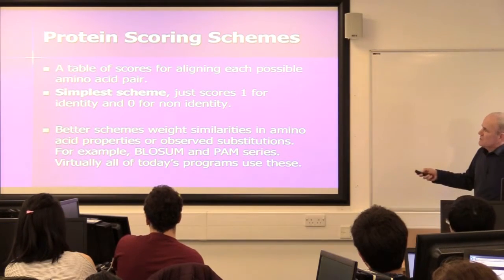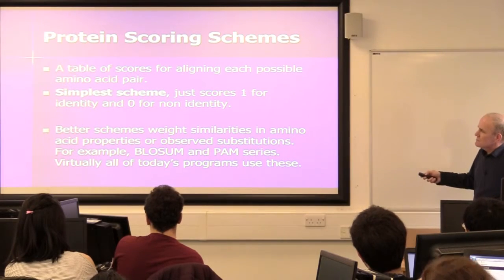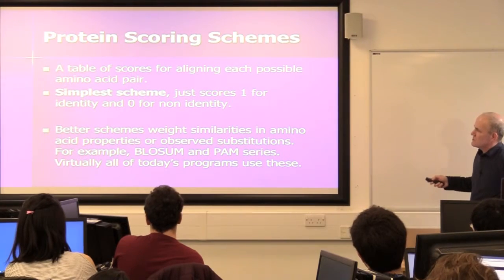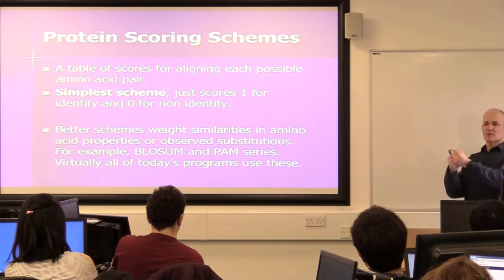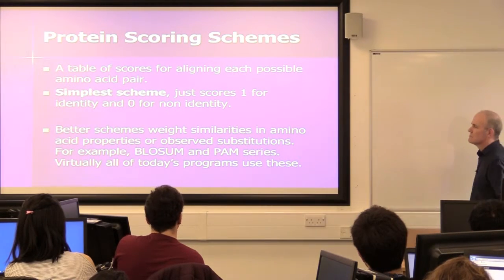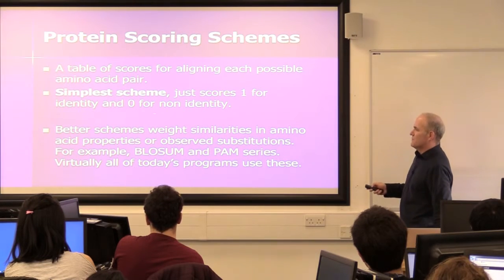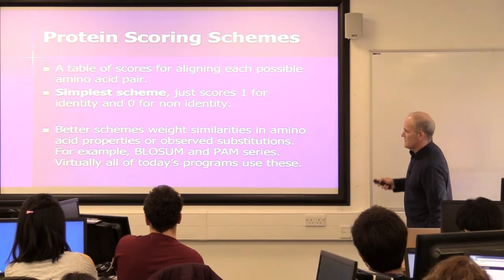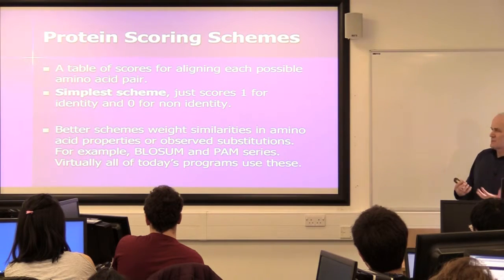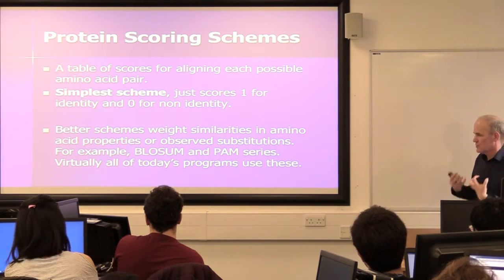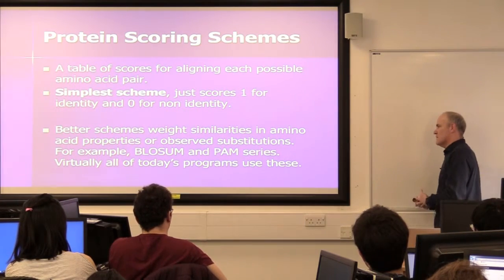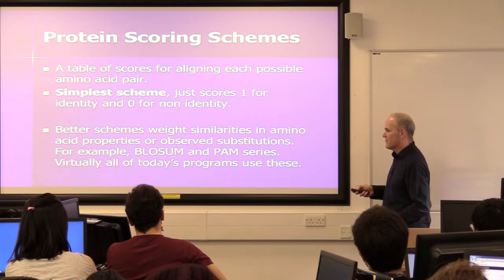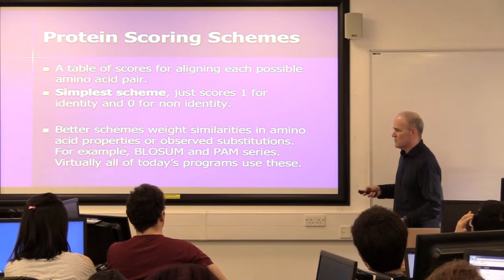So you have a protein scoring scheme — basically a table for aligning every possible pair of amino acids. The simplest one: if it's identical, it's plus one; if it's different, it's a zero. Nobody does that. The better schemes weight the similarities in amino acid properties. There are two kinds of matrices people use: one's called the BLOSUM family and the other is called PAM. For most purposes you will use BLOSUM matrices. Evolutionary biologists prefer PAM because it has more theoretical backing.